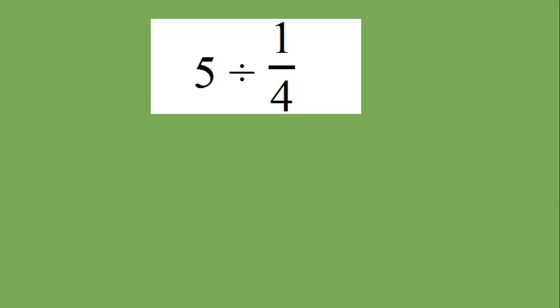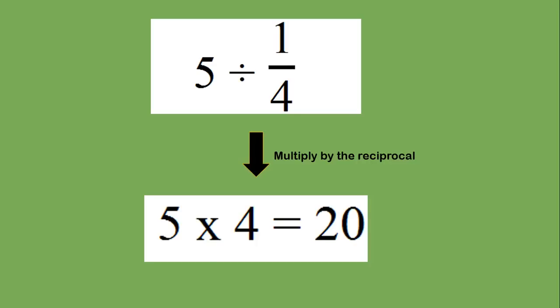So coming back to the beginning of the video, I have five divided by one fourth. If I follow the procedure, I will multiply five by the reciprocal of one fourth, which is four, and get twenty.